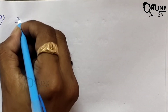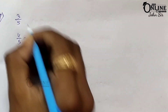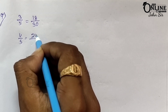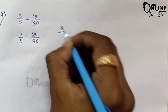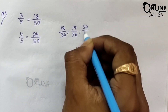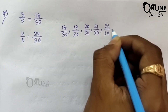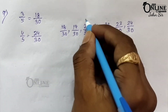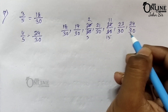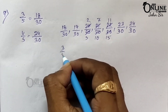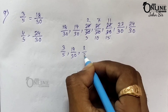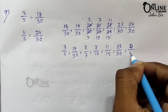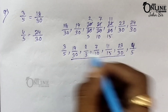Sum number 7: find 5 rational numbers between 3 by 5 and 4 by 5. Since you need 5 rational numbers, multiply by 6. So 3 by 5 becomes 18 by 30 and 4 by 5 becomes 24 by 30. The rational numbers in between are 19 by 30, 20 by 30, 21 by 30, 22 by 30, and 23 by 30. In lowest form: 20 by 30 is 2 by 3, 22 by 30 is 11 by 15. We have 5 rational numbers as the answer.